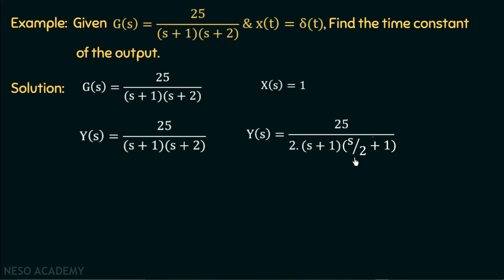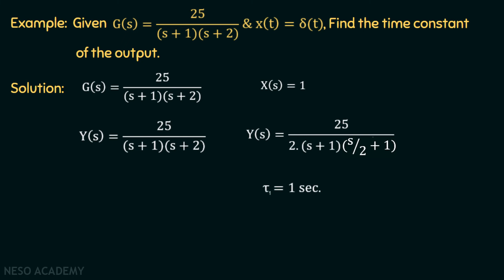Remember, the number of time constants is equal to the total number of poles in the transfer function. In this case, the number of poles is equal to 2, and that's why the number of time constants will also be equal to 2. So the time constant due to the first pole is τ1 equal to 1 second, and the time constant due to the second pole is τ2 equal to 0.5 seconds.